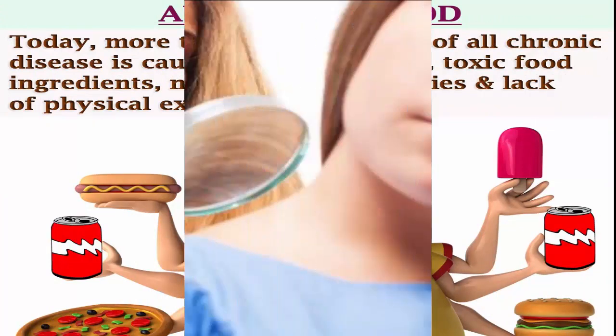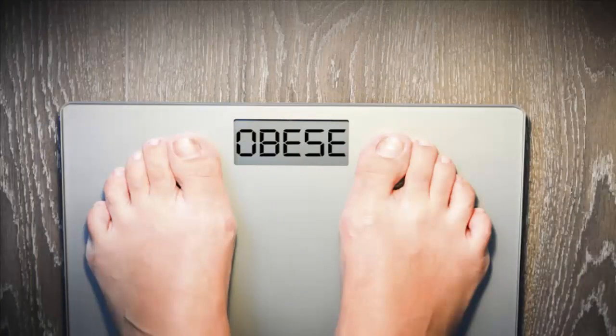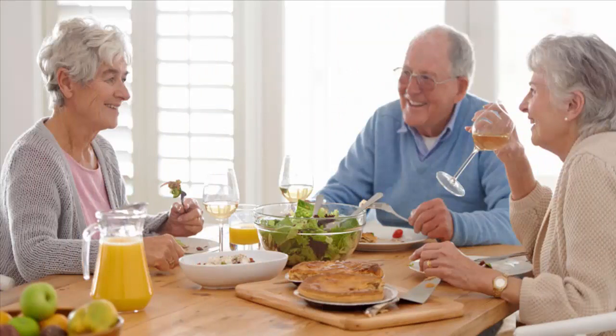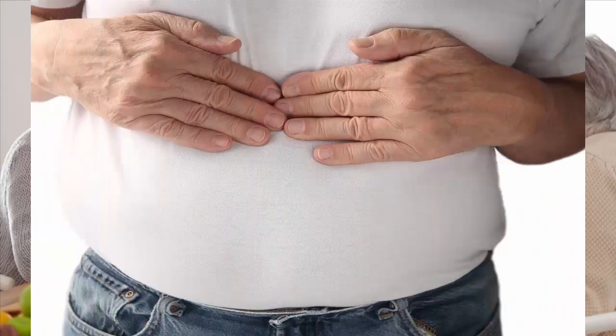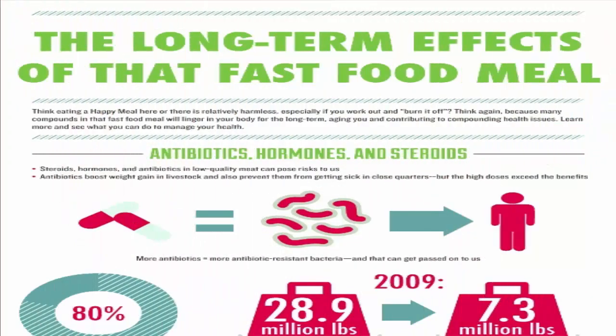Due to this, we see issues in small children like premature white hair at a very young age, and many other health problems. In youngsters, obesity is very common, and in the older age group, there are many digestive problems. These are just examples — there are tons of problems that we may not even notice but are continuously being created in our bodies.